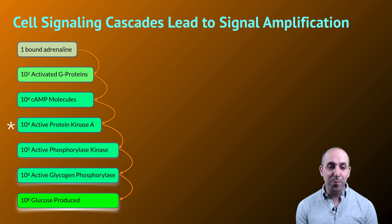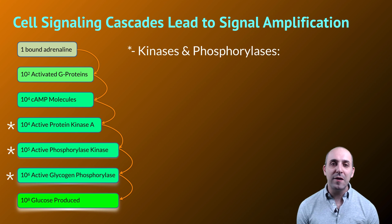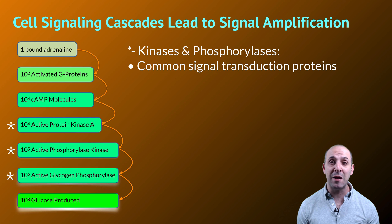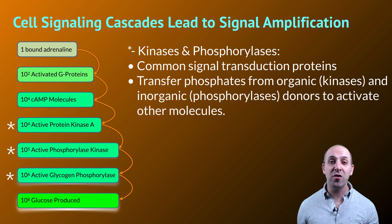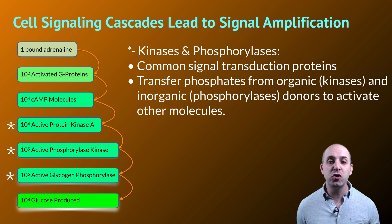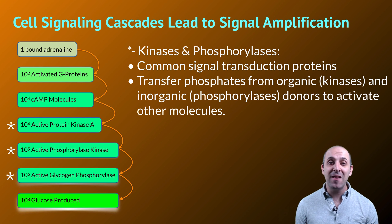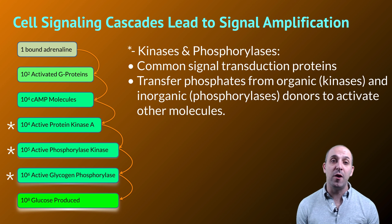Protein kinases and protein phosphorylases are very common proteins in signal transduction pathways. The reason for that is because they transfer phosphates from donor molecules like ATP onto other molecules in order to activate those molecules and give them the energy required for the cellular response.